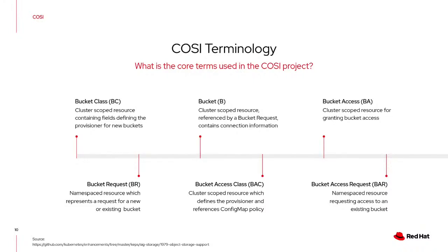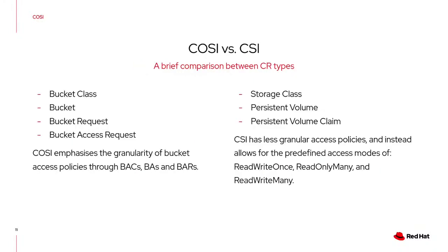So where does Cozy fit in? In Cozy, there are six main terms that are used: the bucket class, the bucket request, the bucket, the bucket access class, the bucket access, and the bucket access request. We can draw some comparisons between Cozy and CSI. Where Cozy has a bucket class, CSI defines a storage class. A bucket is very similar to a persistent volume. A bucket request and bucket access request together kind of mimic a persistent volume claim. Cozy emphasizes the granularity of bucket access policies through bucket access classes, bucket accesses, and bucket access requests.